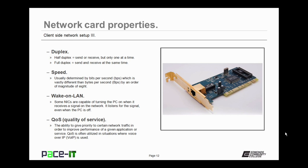Some NICs have a wake-on-LAN feature. When the PC is turned off, a little bit of trickle power is supplied to the NIC, which listens for a wake-up signal on the network. The network can send out a magic signal, and the NIC can actually boot the PC from that signal. Then there's QoS — quality of service — the ability to give priority to certain network traffic to improve performance of a given application or service. QoS is often utilized where voice over IP is used, as voice traffic needs high priority to ensure clear communication.